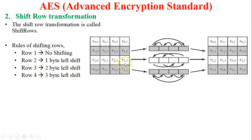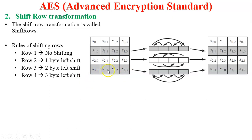For row three, s[2][2], s[2][3], s[2][0], s[2][1] form the circular left shift result. For row four, there is a three-byte left circular shift. You can see s[3][0], s[3][1], s[3][2], s[3][3] — s[3][3] comes to the first position, followed by s[3][0], s[3][1], and s[3][2].